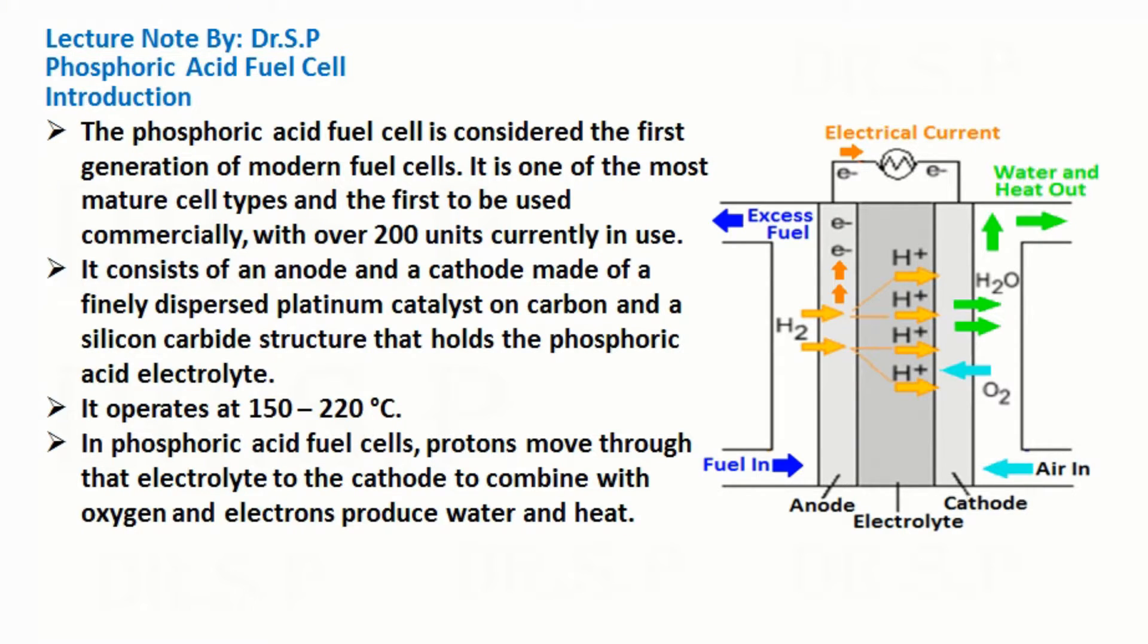The Phosphoric Acid Fuel Cell is considered the first generation of modern fuel cells. It is one of the most mature cell types and the first to be used commercially, with over 200 units currently in use.